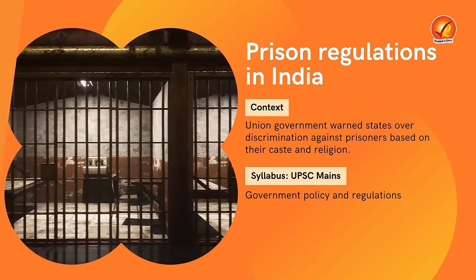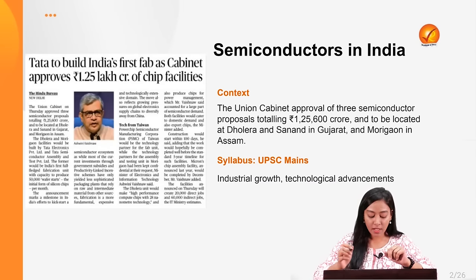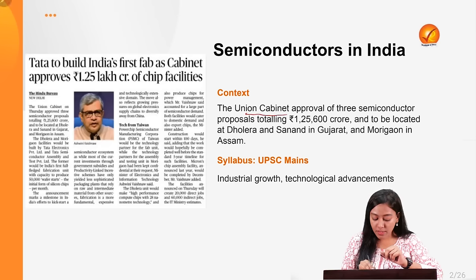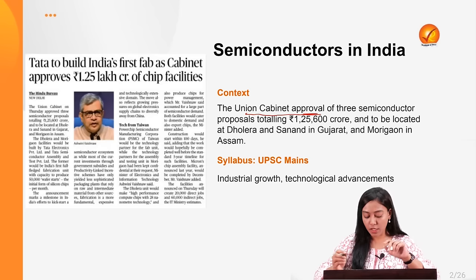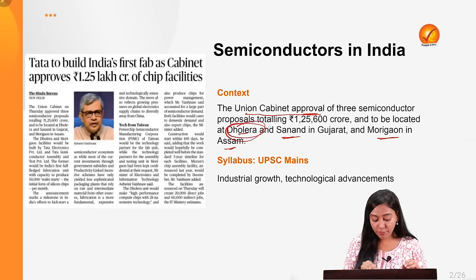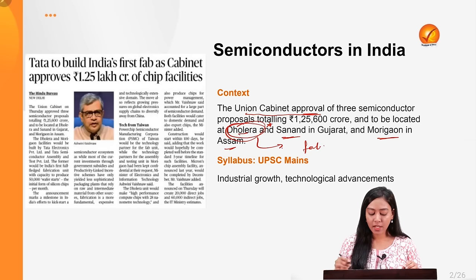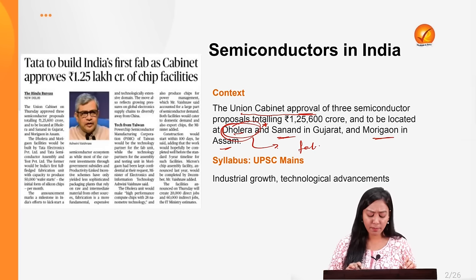Our first topic is the semiconductor manufacturing industry in India, coming in the context of the Union Cabinet's recent approval of setting up three semiconductor fab units in two states — two in Gujarat and one in Assam. Dholera and Sanand will be in Gujarat, and Morigaon in Assam. This also makes Dholera the first ever full-fledged working fab unit to be constructed in India.